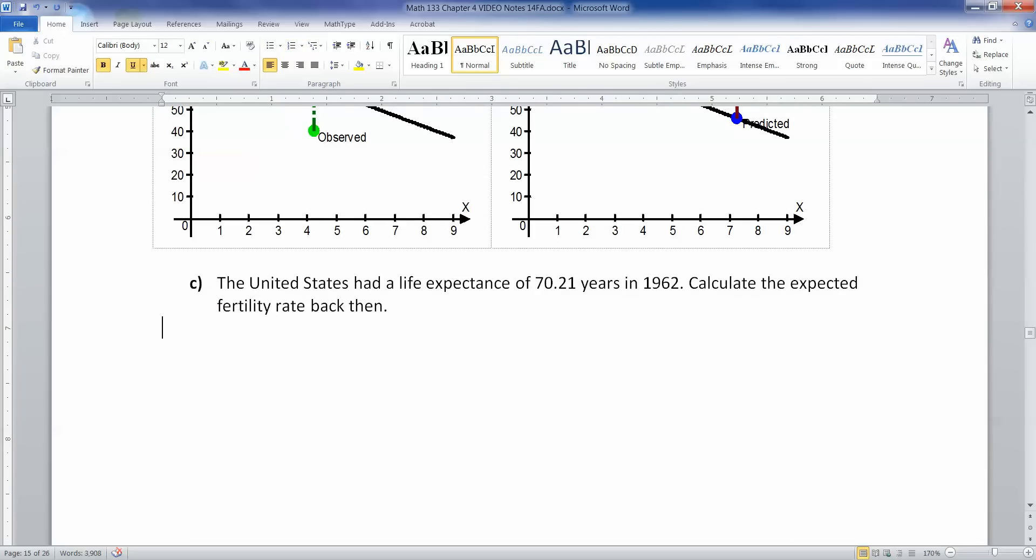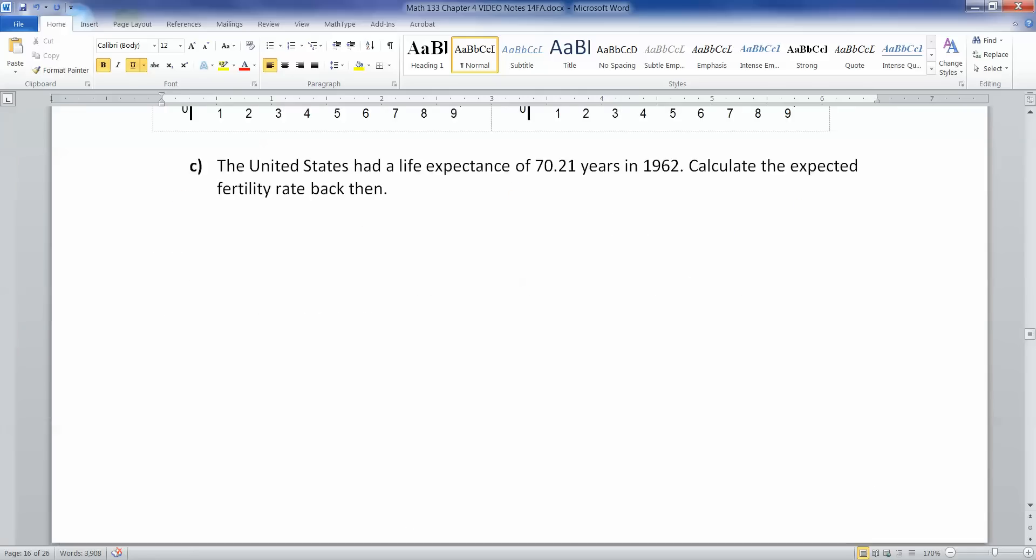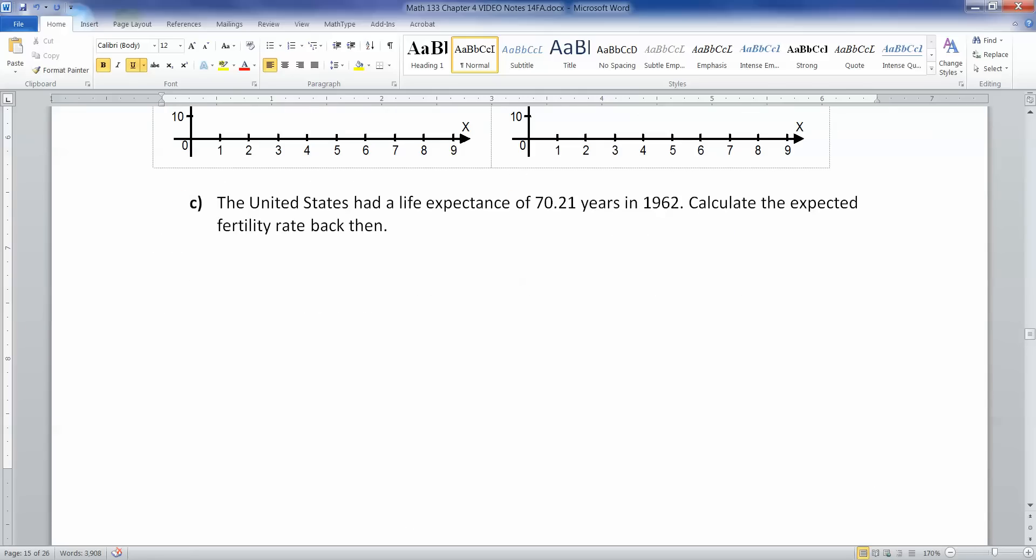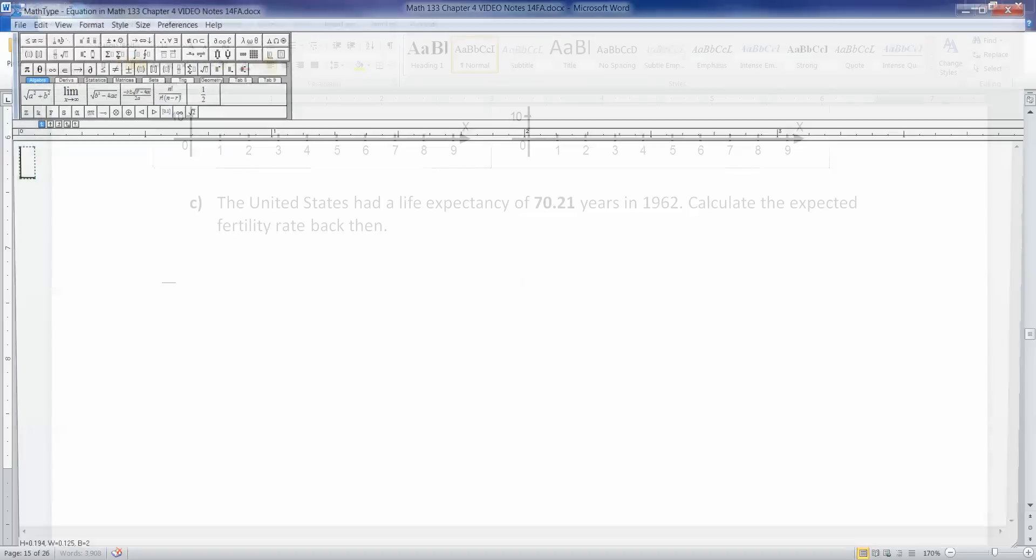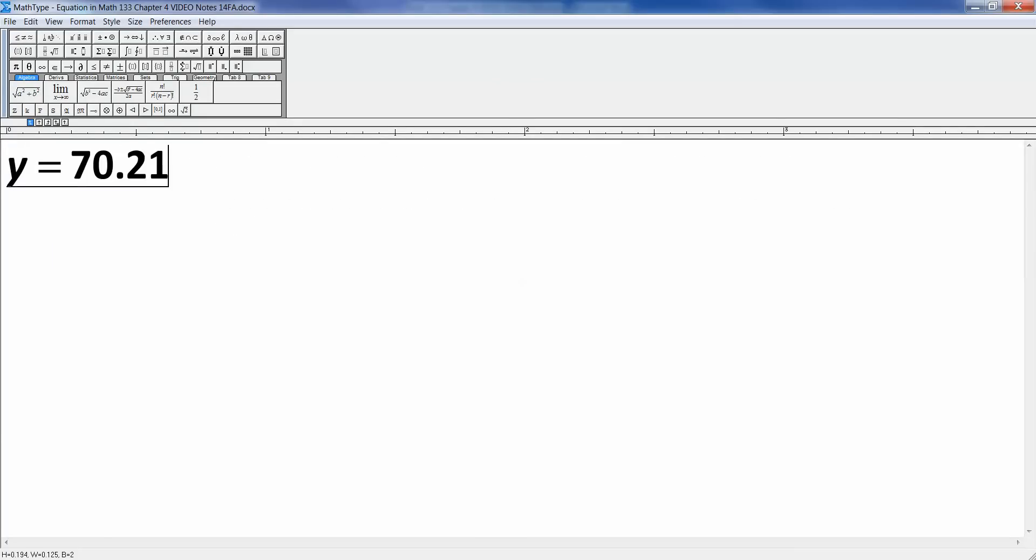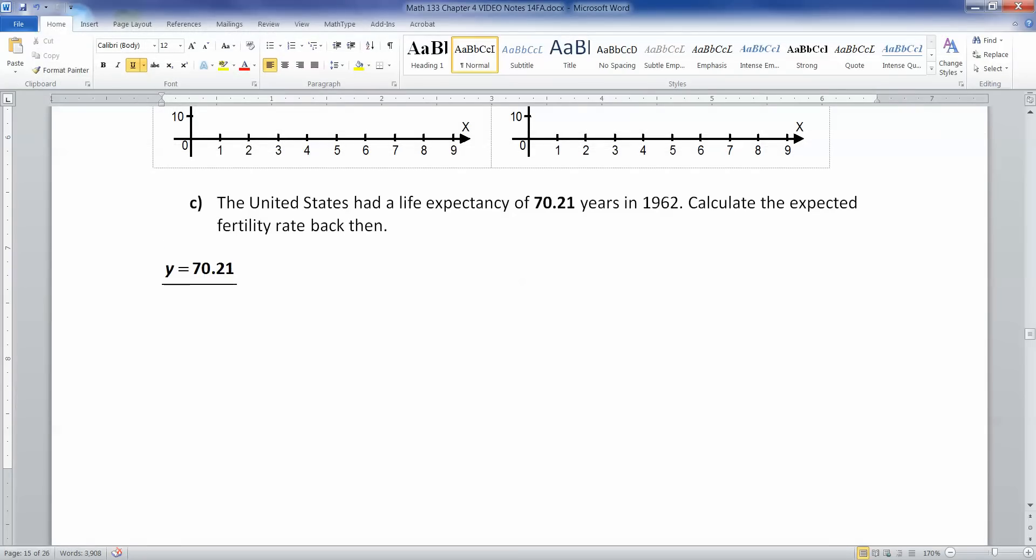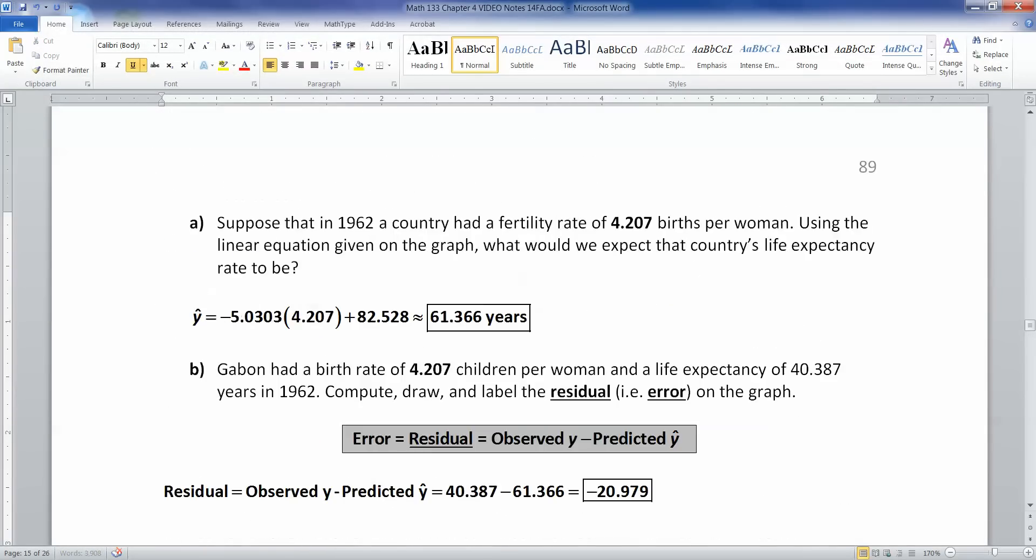All right. Now, what about the United States? The United States had a life expectancy of 70.21. Calculate the fertility rates. So notice we're going a little bit backwards here. Life expectancy of 70.21 years. So they're telling us that Y is 70.21. And they're asking us for X, right? So how are we going to solve that? Well, we have the equation.